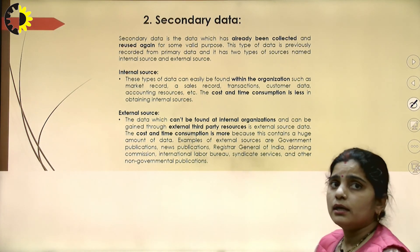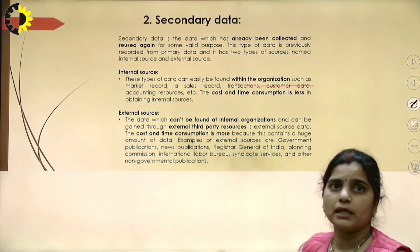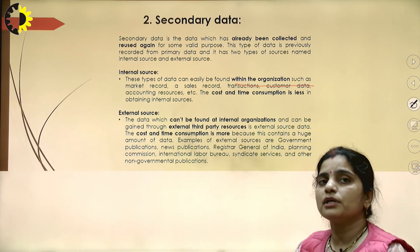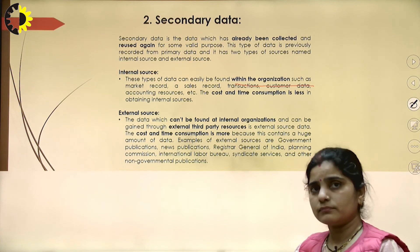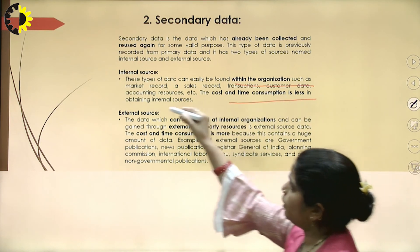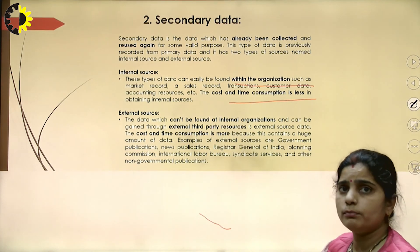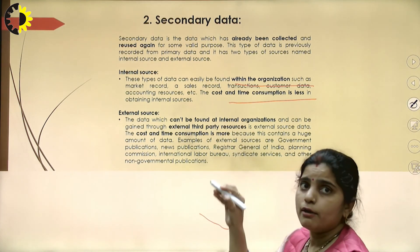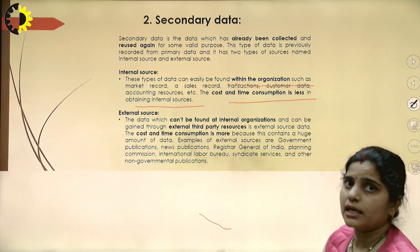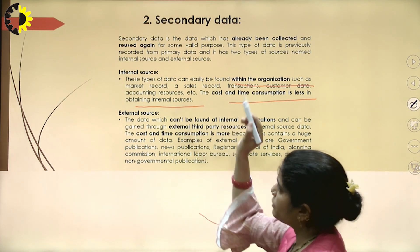In the internal source, this type of data can easily be found within the organization, such as market records, sales records, transactions, customer data, accounting resources, and organizational data like student information. The cost and time consumption to collect secondary data via internal sources is less, because this type of data can be easily found within the organization.